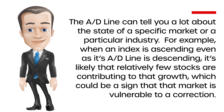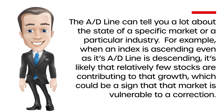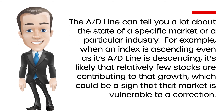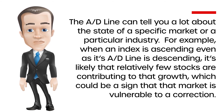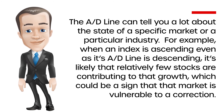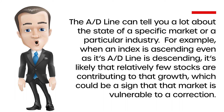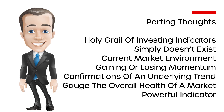As a complementary tool, the AD line can tell you a lot about the state of a specific market or industry. When an index is ascending even as the AD line is descending, it's likely that relatively few stocks are contributing to the growth, signaling vulnerability to a correction — as was certainly the case with the NYSE composite index in the months leading up to the 2008 bear market. Even if the two lines diverge dramatically, investors should avoid making decisions based on the AD line alone. When the AD line starts to fade, it's an opportunity to be more cautious and cut back on stock exposure a bit.